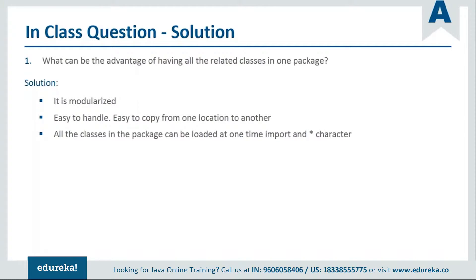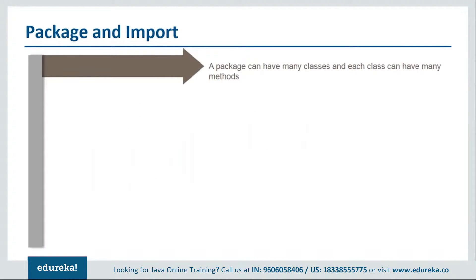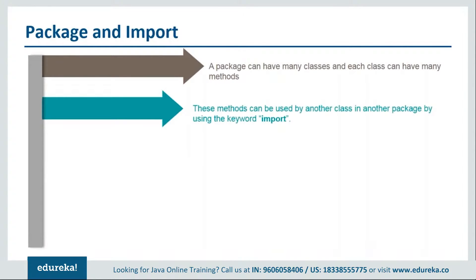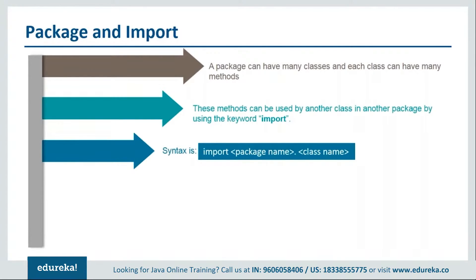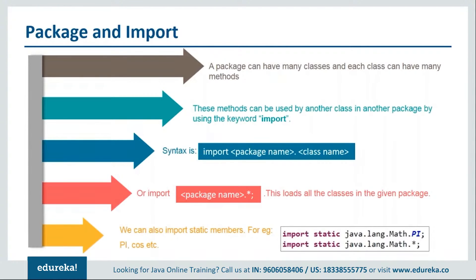All classes in a package can be loaded at once by using 'import' with a star character. This is the program we just saw — a package created with a class under it. Within a package you can have multiple classes, each with multiple methods. These methods can be accessed by a class in another package depending on the access level. This is the syntax to import a given class, or you can import all classes in a package using the wildcard. You can also access static members.